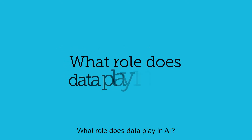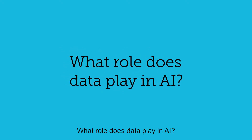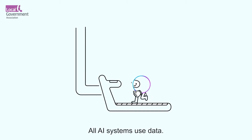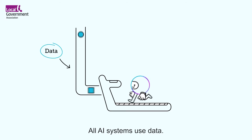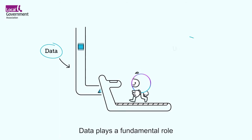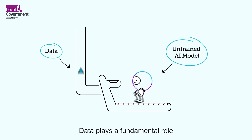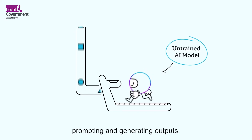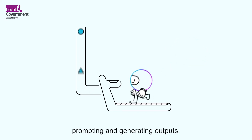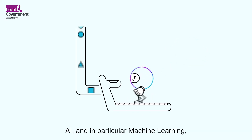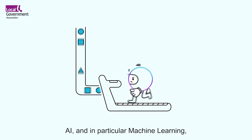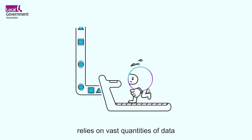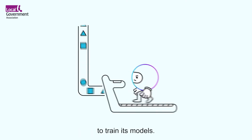What role does data play in AI? All AI systems use data. Data plays a fundamental role in training AI models, prompting and generating outputs. AI, and in particular machine learning, relies on vast quantities of data to train its models.